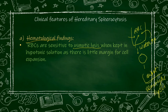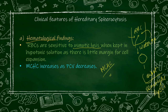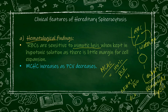This osmotic lysis is the confirmatory test for hereditary spherocytosis. Next, MCHC — mean corpuscular hemoglobin concentration — will be increased. MCHC equals hemoglobin percentage divided by packed cell volume. Since the RBC has attained least volume as a sphere, the packed cell volume decreases. MCHC is inversely proportional to packed cell volume — so as packed cell volume decreases, MCHC increases. This is another feature of hereditary spherocytosis.